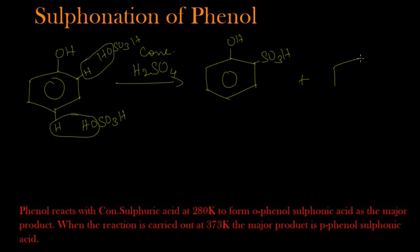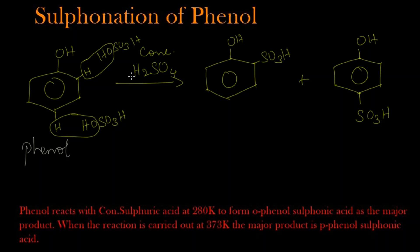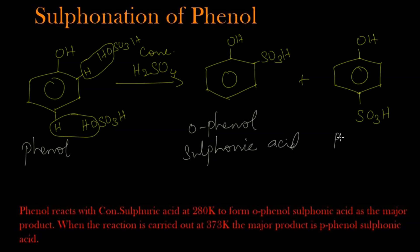If the substitution happens at the ortho position, we get OHSO₃H, which is called ortho phenol sulfonic acid. If it happens at the para position, we get OHSO₃H at para, called para phenol sulfonic acid. So phenol reacts with concentrated sulfuric acid to give ortho phenol sulfonic acid and para phenol sulfonic acid.